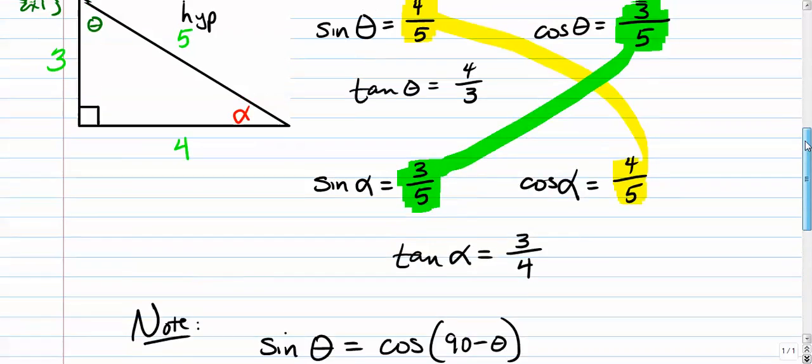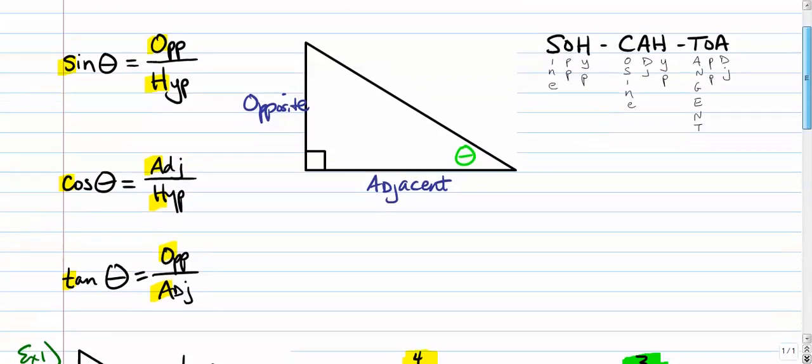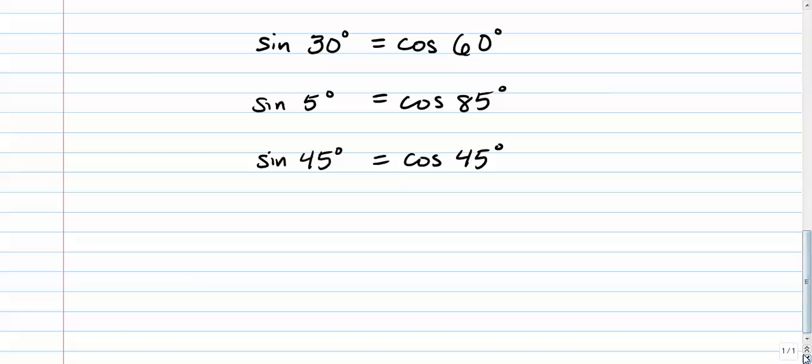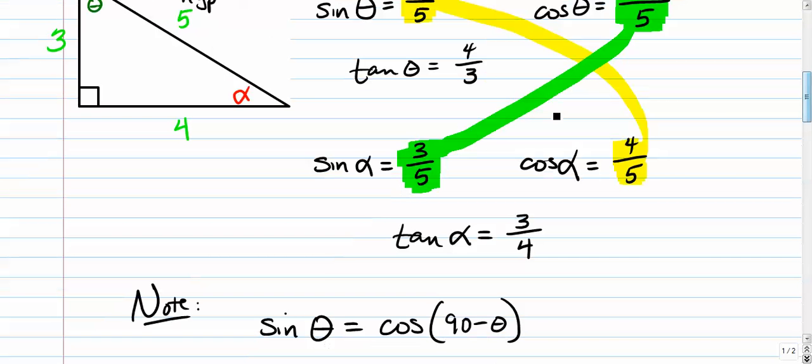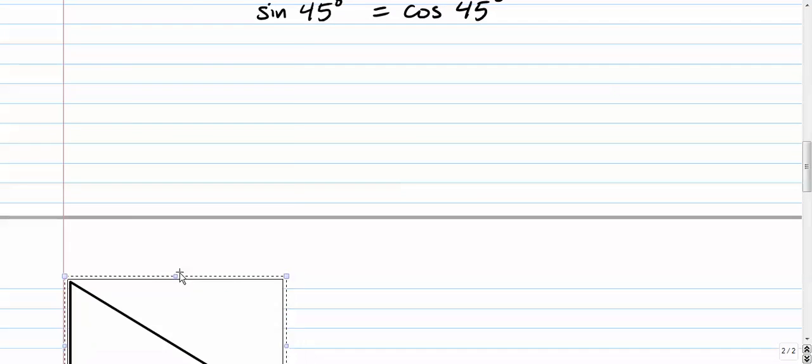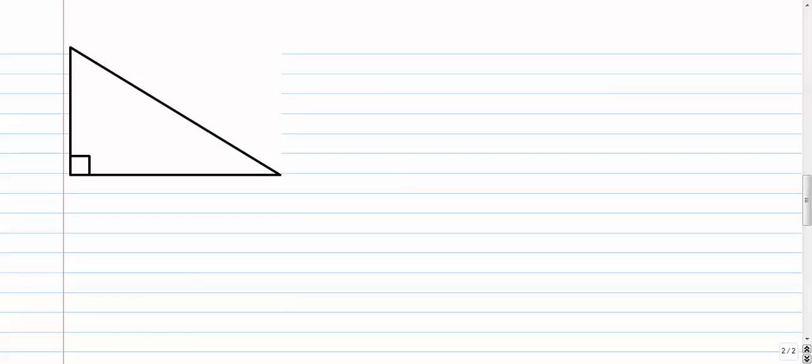Now the next thing we want to talk about is actually how to find side lengths. We're going to use SOHCAHTOA. We're going to use that to actually find side lengths. So let's try another one here. Let's bring down this triangle here, and we'll continue to use him. So let's say, we'll call this example 2. So let's say we have an angle here that is 34 degrees. And let's say we have a side length here that is 13 inches. And let's say that we wanted to find the hypotenuse.